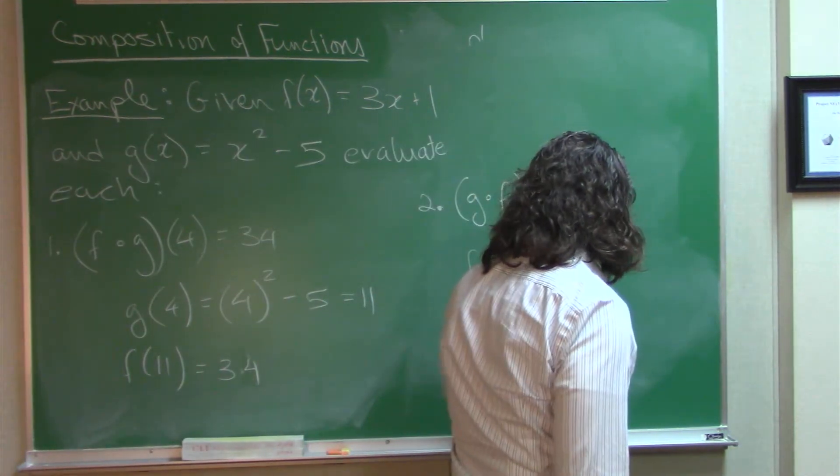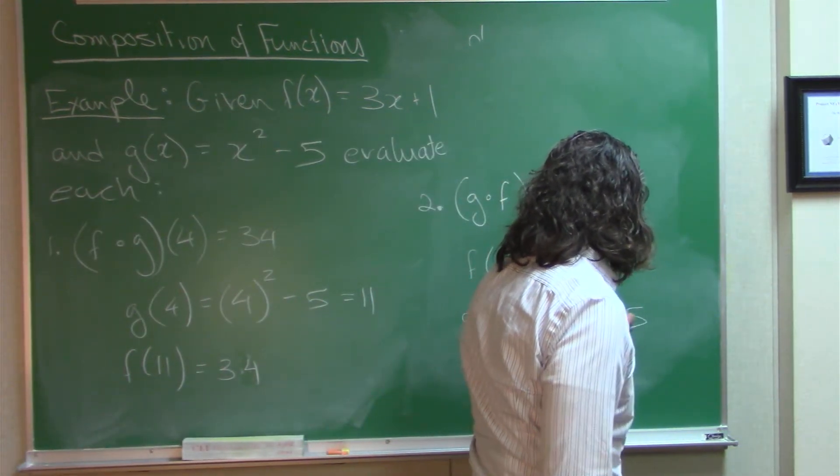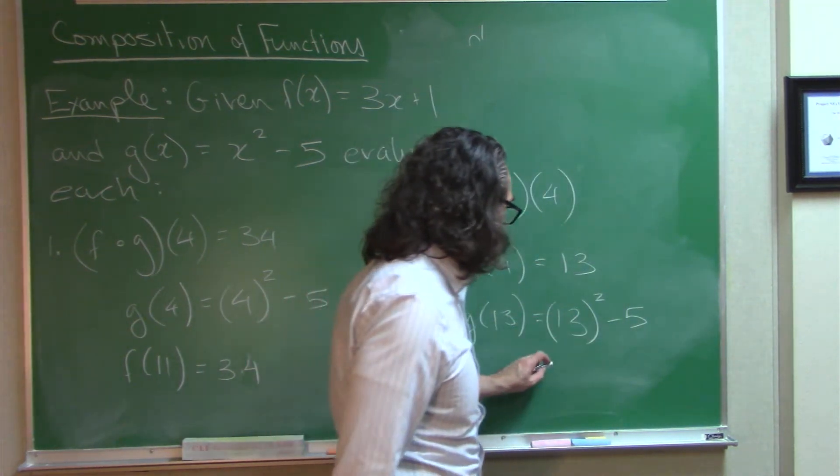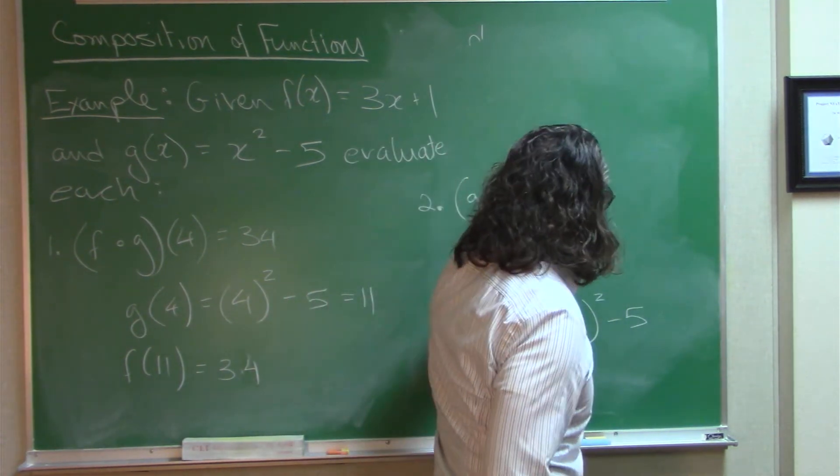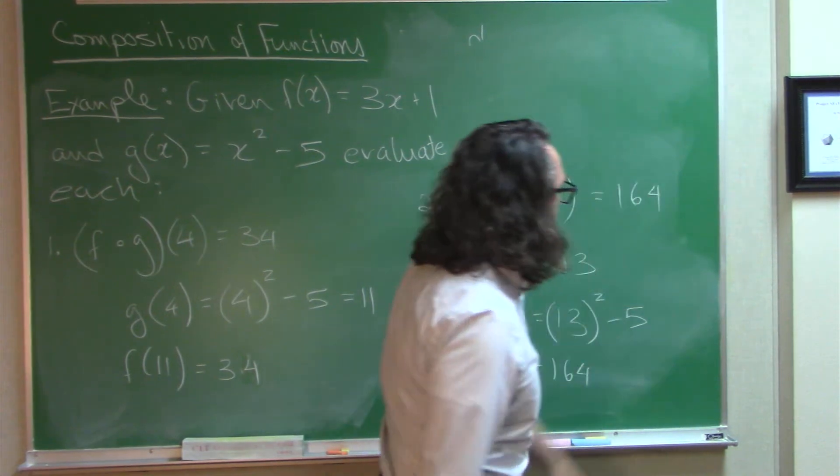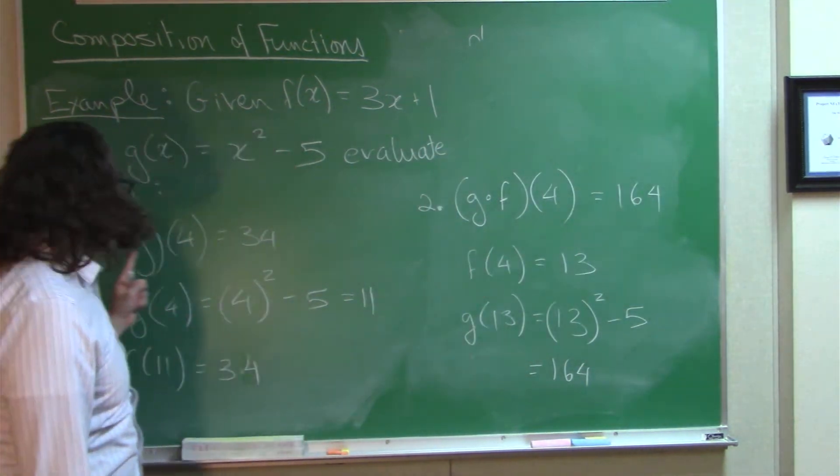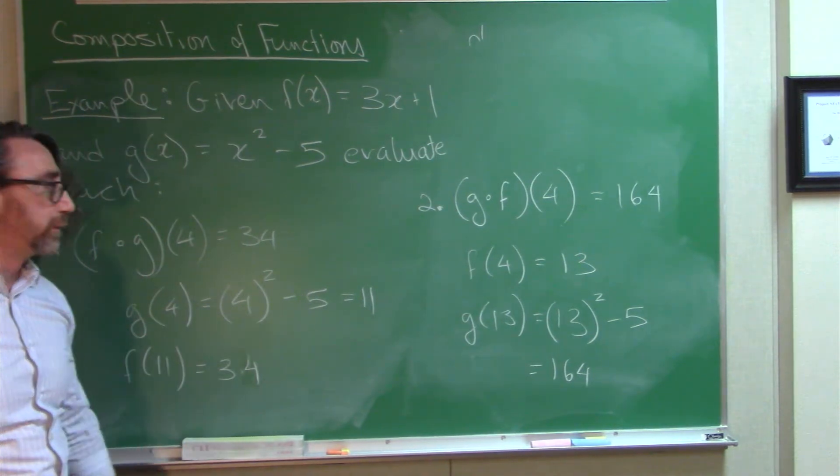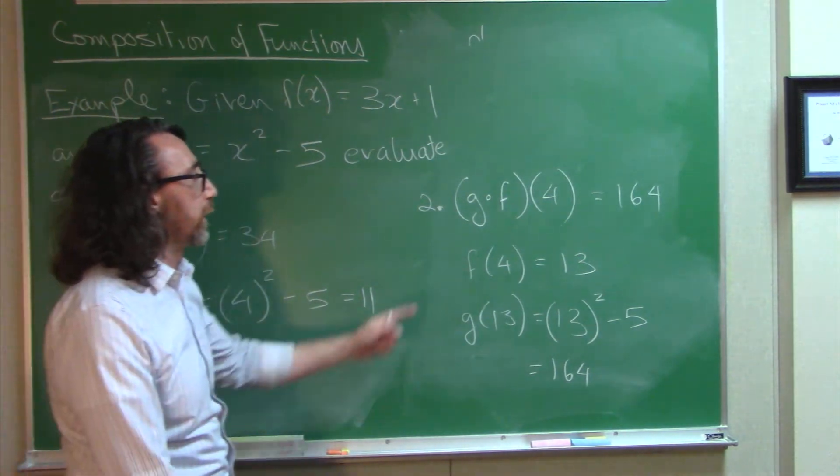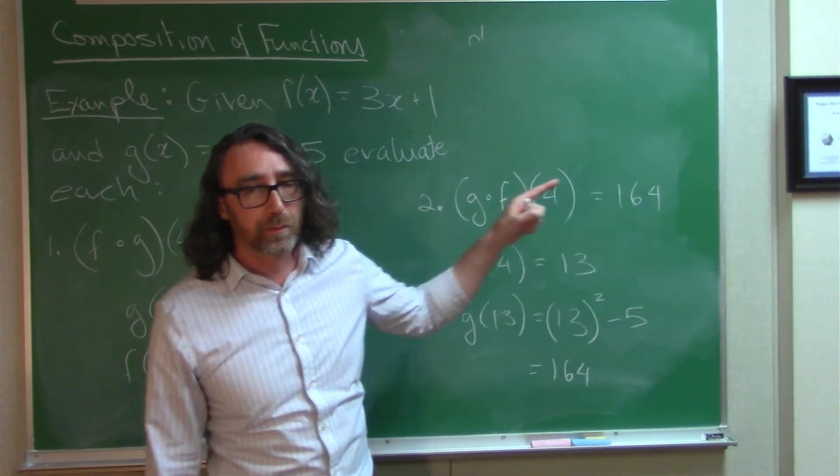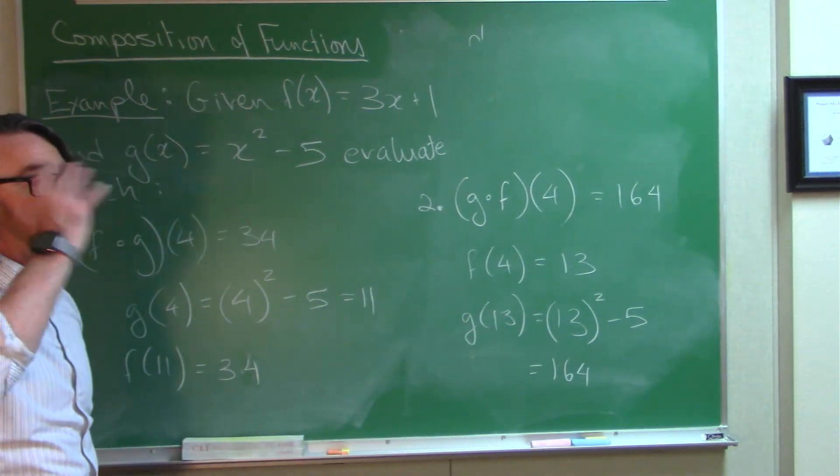So, I take 13 and I square it. 169 there minus the 5 is 164. Okay, notice two different outputs. When I did F of G of 4, I got 34. When I did G of F of 4, 164. Okay, so typically order matters.